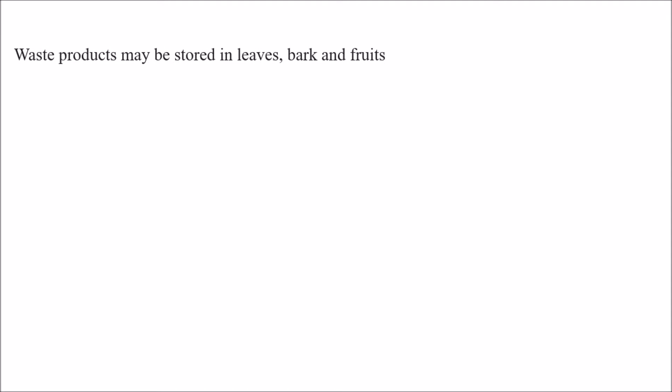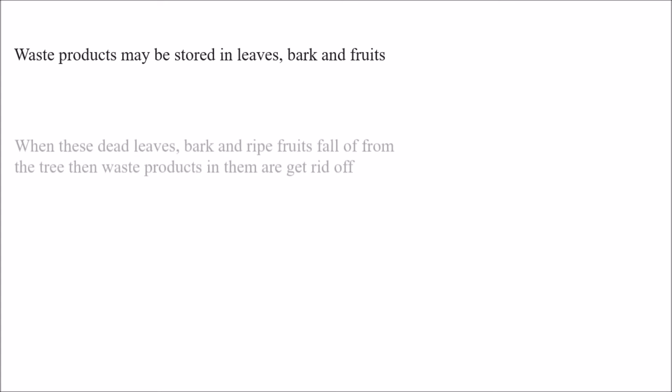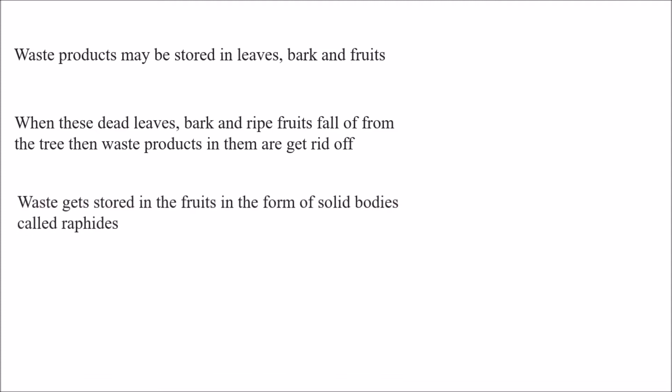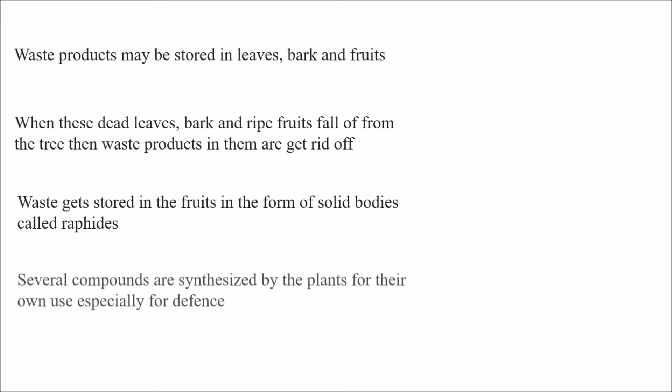Waste products may be stored in leaves, bark, and fruits in plants. The waste materials are accumulated or stored in these parts. When dead leaves, bark, and ripe fruits fall off from the tree, the waste products in them are gotten rid of. Waste also gets stored in fruits in the form of solid bodies called raphides.